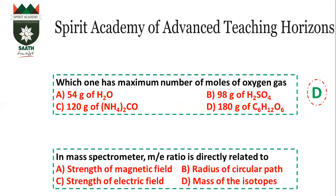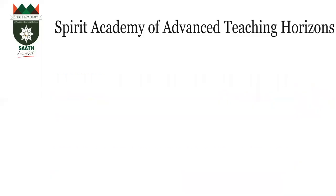In a mass spectrograph, mass-to-charge ratio is directly related to what expression? The value is equal to x²r over 2E. Since radius r is in the numerator, there is a direct relationship between mass-to-charge ratio and the radius. So the answer is B.